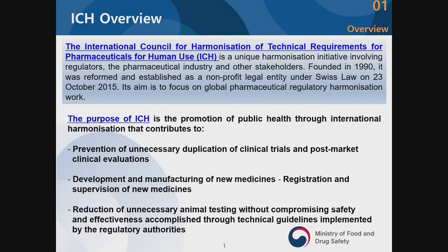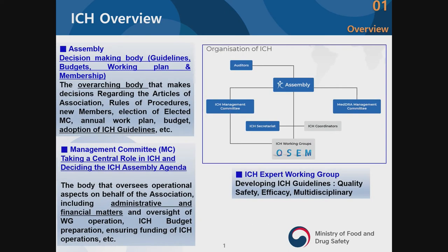When it comes to ICH, some countries came together in 1990 to think about and formulate guidelines for pharmaceutical product regulation. There has been a reform process from 2015, so other than the three founding members, other member countries also joined ICH, expanding the scope of the organization.